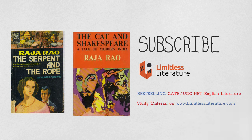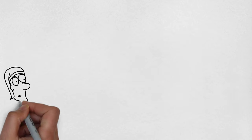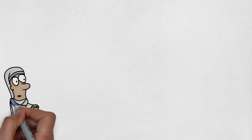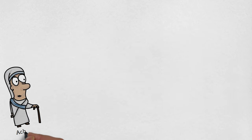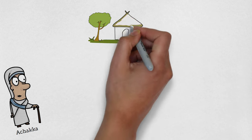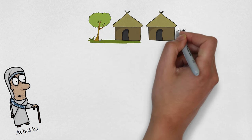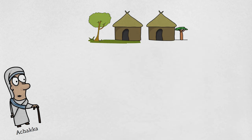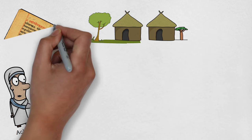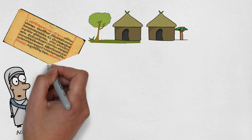Now let's get on to the story Kanthapura by Raja Rao. The story is narrated by Achakka, who is an elderly Brahmin woman who knows everything about all the villagers in great detail. She narrates the story in a non-linear way, similar to the tales narrated in Indian Puranas.